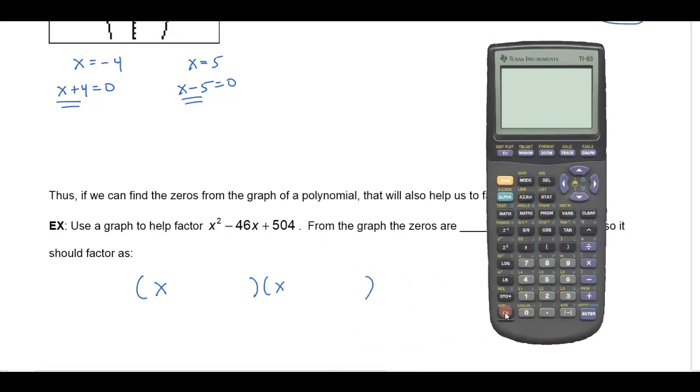So let's do that. Let's graph x² - 46x + 504. And I'll just graph it on my standard window. And because this is such a big number, the polynomial might not fit in my window, and sure enough, I don't get anything.